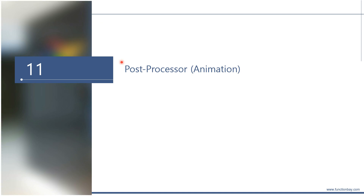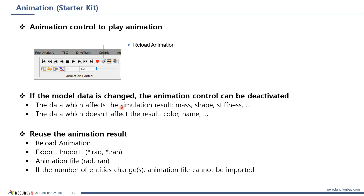The next topic is post processor. Let me introduce the post processor for animation. In the starter kit, animation control has been introduced. After simulation, you can use animation control to play the animation of the model. Please note that the animation control is deactivated if you change any parameter that can affect the simulation result.